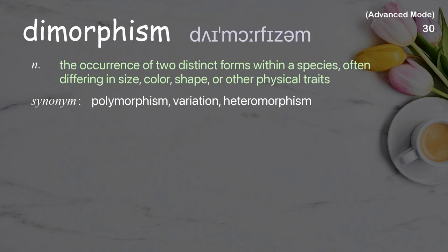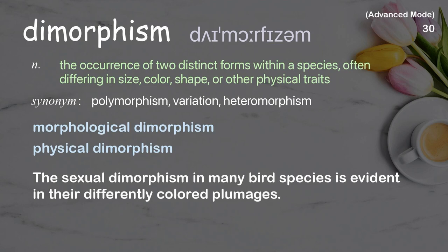Dimorphism: the occurrence of two distinct forms within a species, often differing in size, color, shape, or other physical traits. Examples: morphological dimorphism; physical dimorphism. Example sentence: The sexual dimorphism in many bird species is evident in their differently colored plumages.